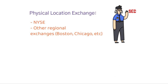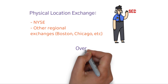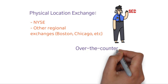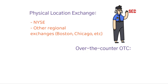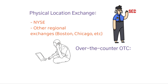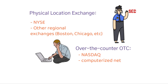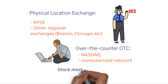Over-the-counter, or OTC, markets are a large collection of brokers and dealers connected electronically by telephones and computers, providing trading in unlisted securities. The computerized network used by dealers in this market is known as NASDAQ. Anyone who has invested in the stock market should be interested in stock market returns.